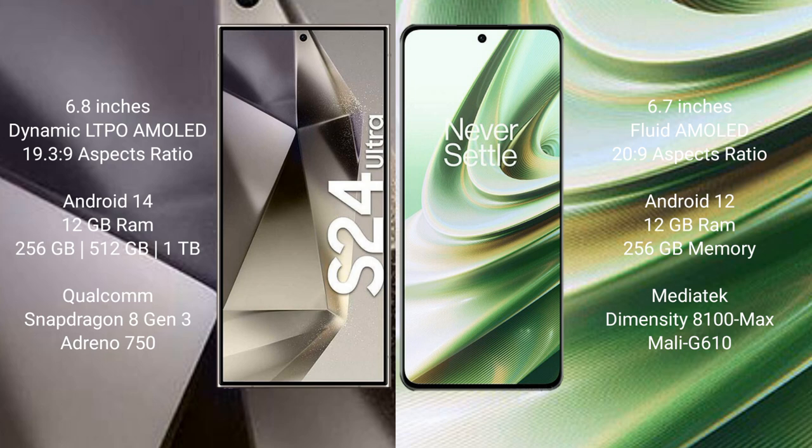Samsung Galaxy S24 Ultra runs on the Android 14 operating system. OnePlus 10R runs on the Android 12 operating system.